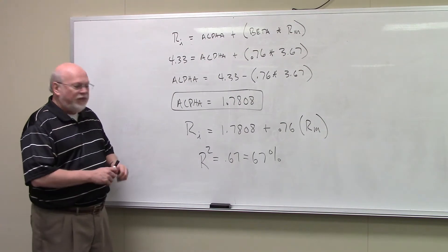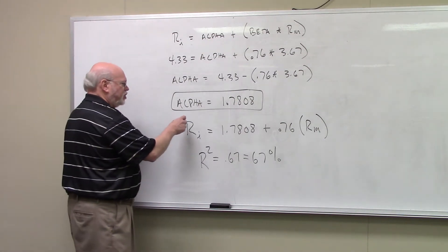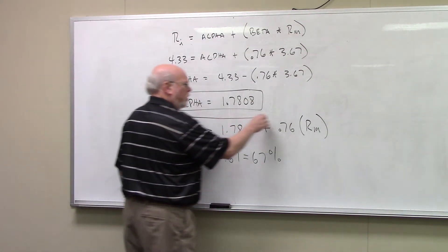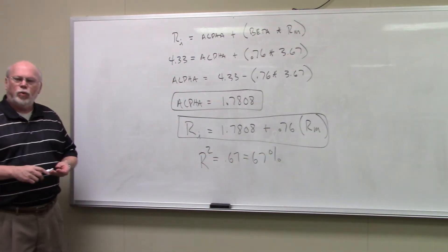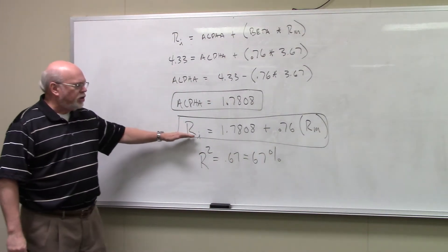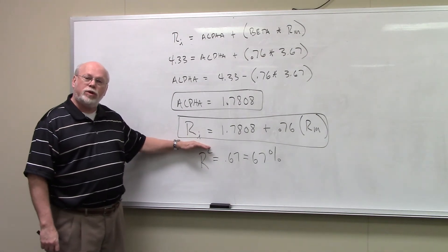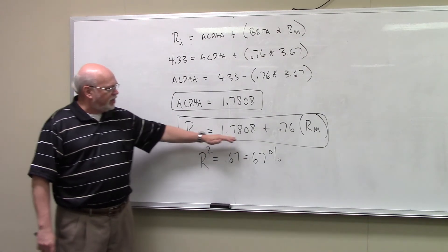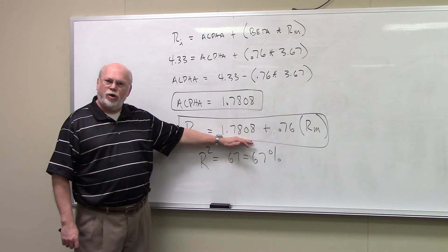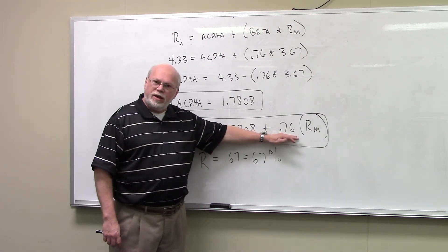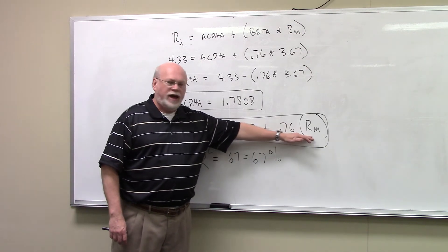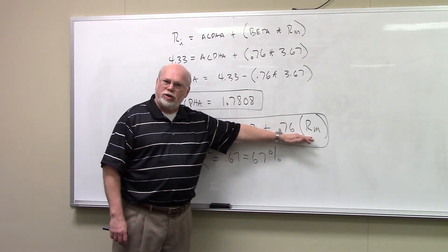Now given that, that gets us to the final regression equation, which is this right here, which says that the return of the security, what we think the return of the security is now, is going to be 1.7808, which is alpha, plus the beta of the security times whatever we think the market return is going to be.